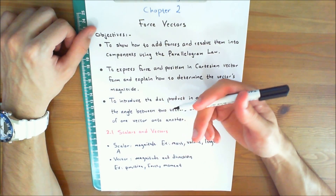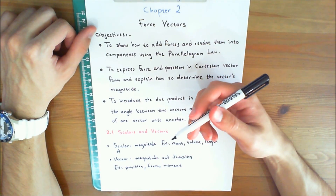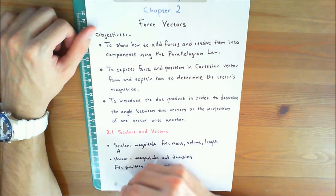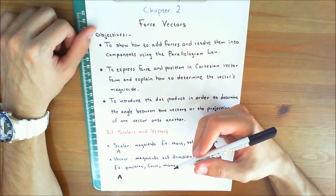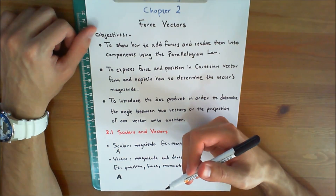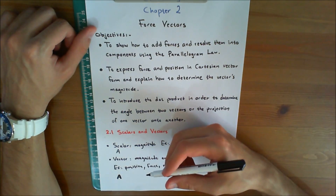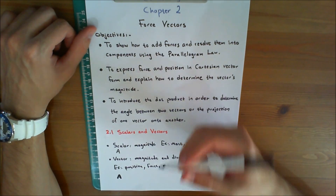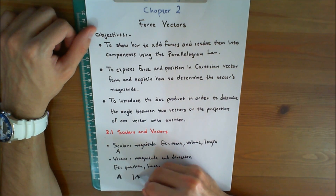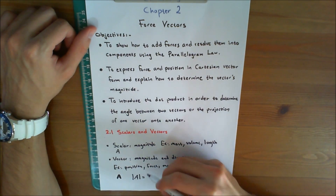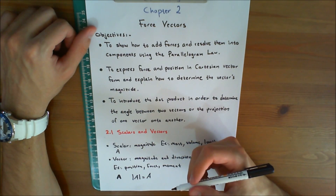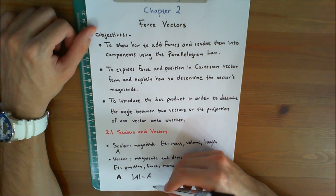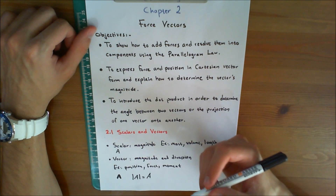In most textbooks, vectors will be symbolized in boldface type — for example, A in boldface. The magnitude, which is always a positive quantity, is symbolized in italic type, written as A, which means simply the magnitude of A. This is understood to be a positive scalar.